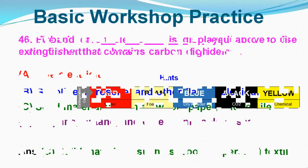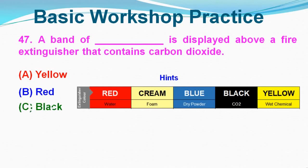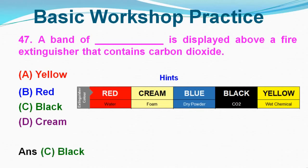Question No. 47: A band of which color is displayed above a fire extinguisher that contains carbon dioxide? Option A: Yellow, Option B: Red, Option C: Black, Option D: Cream. Correct answer is Option C, Black.